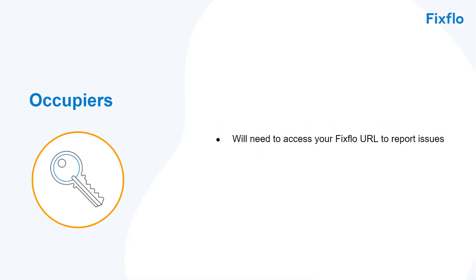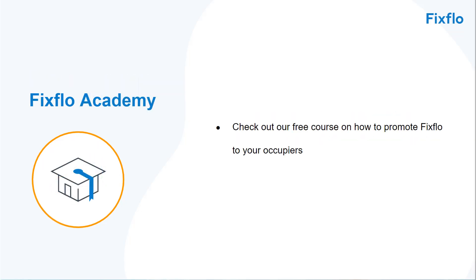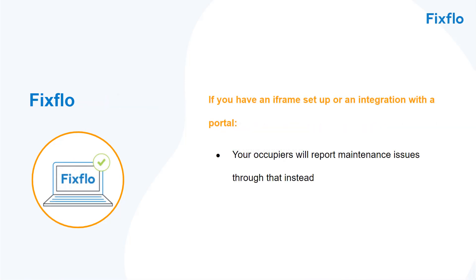Occupiers will need to access your FixFlow URL to report issues. We have many ways to help you promote your FixFlow URL to your occupiers to increase usage. Please check out our free course on how to best promote FixFlow to your occupiers on FixFlow Academy. It is important to note that if you have an iframe setup or an integration with a portal, then your occupiers will report maintenance issues through that instead.